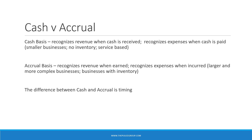Now let's say your electric bill is sent to you quarterly. The first quarter, covering January, February, and March, is paid in April. On the accrual basis, the expense is recognized ratably over the three months, so one-third is recognized each month, assuming the amount is the same month to month. The cash basis wouldn't show an expense until that bill was paid in April.